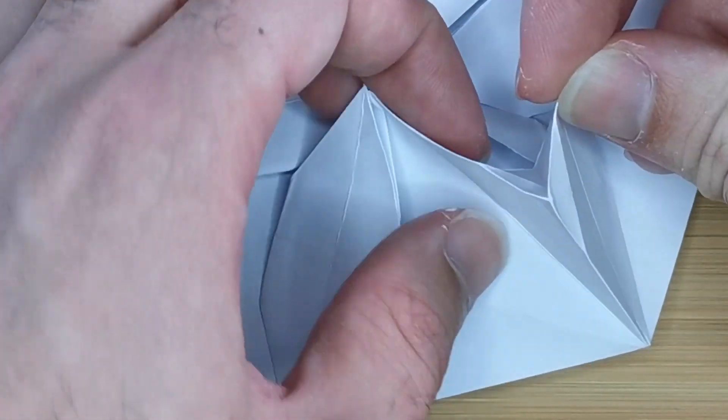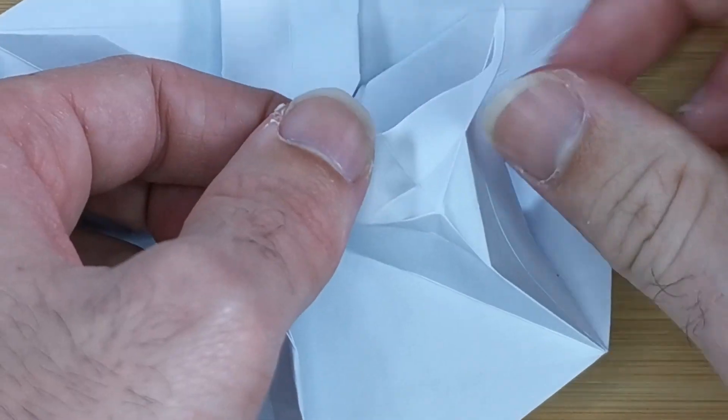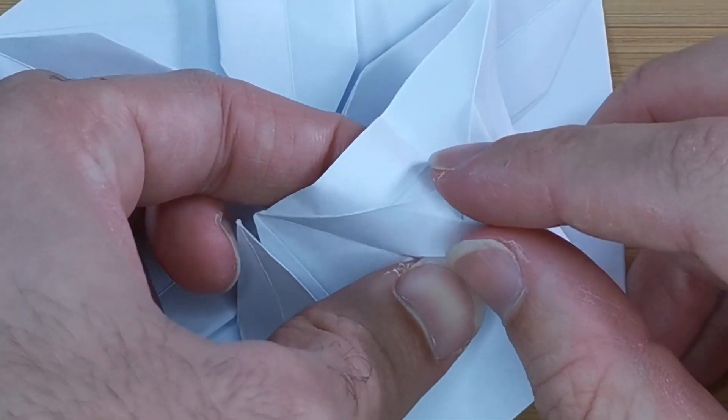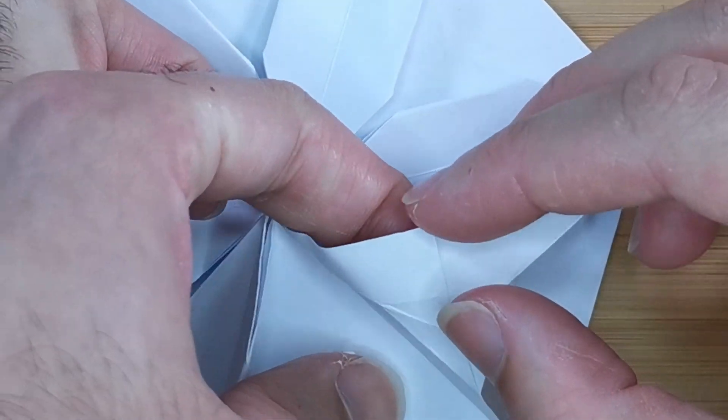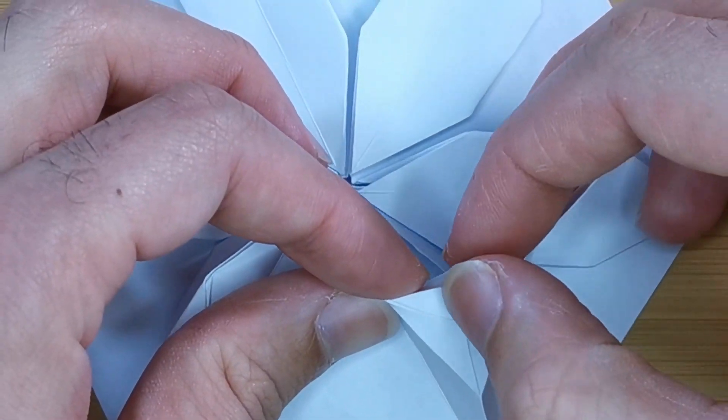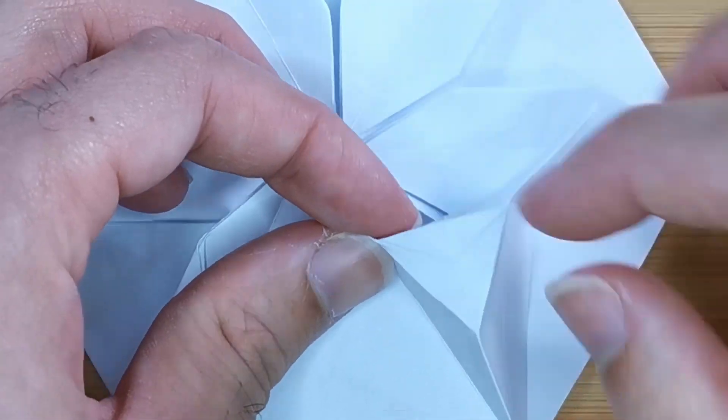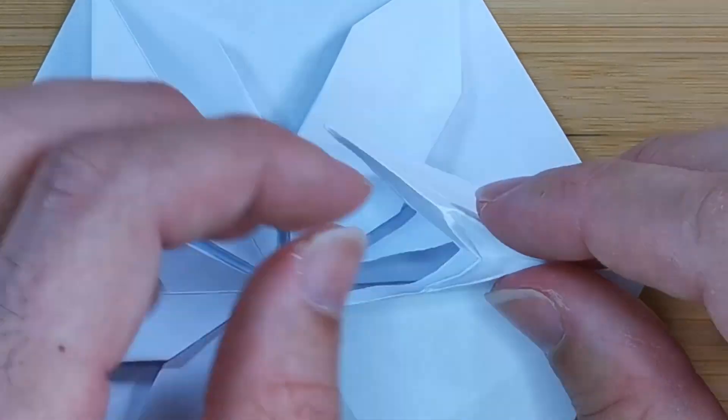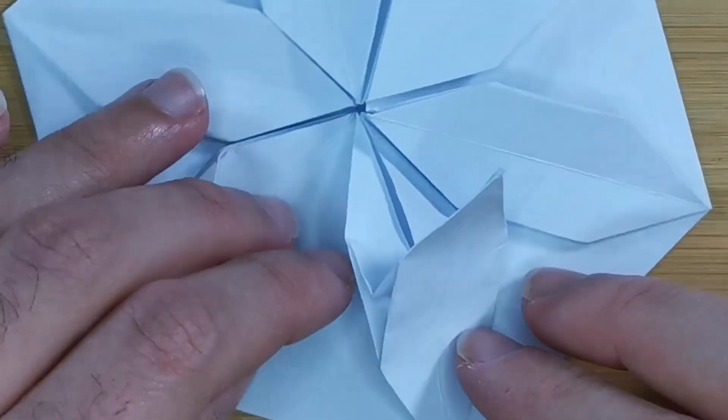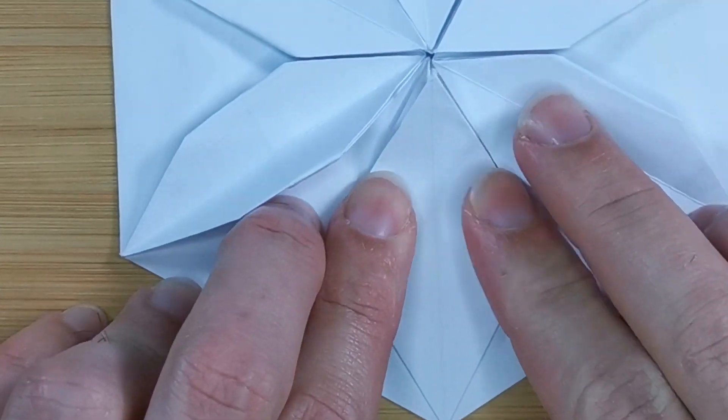Repeat on the opposite flap. Make all three creases of the triangle mountain folds and push like this to make the open sink and fold the branch flat.